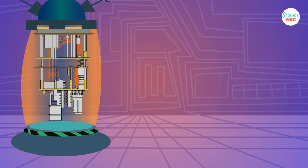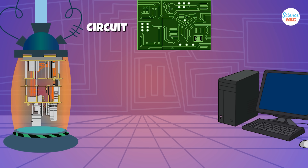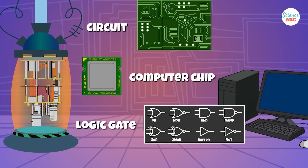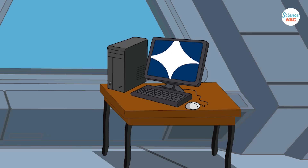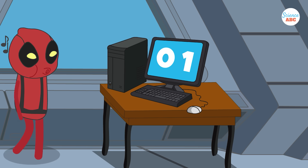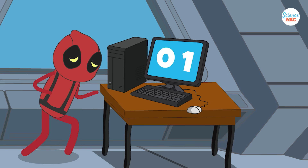A quantum computer and a classical computer are similar in some ways. Both have circuits, chips, and logic gates to process information, and they are both operated by algorithms. However, the primary difference lies in how they process information. Classical computers use binary bits — zeros and ones — representing the on or off state of a current.